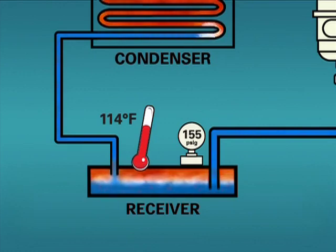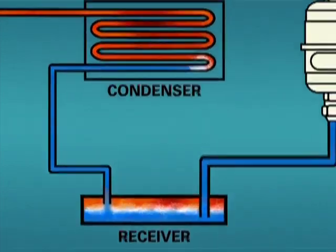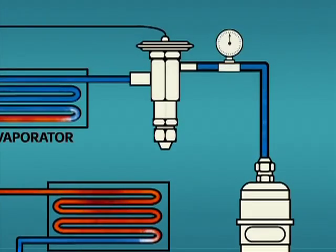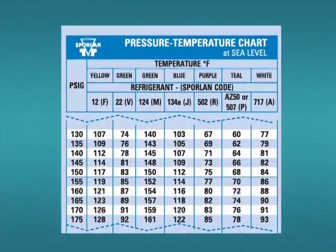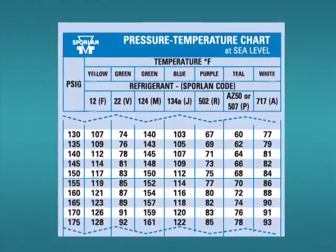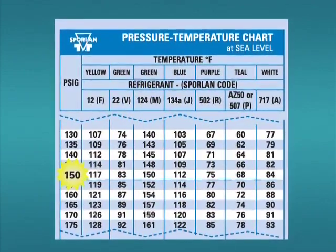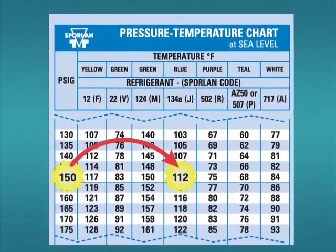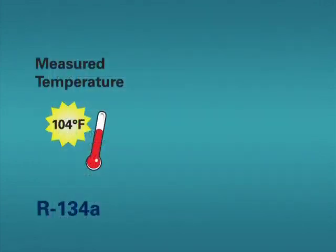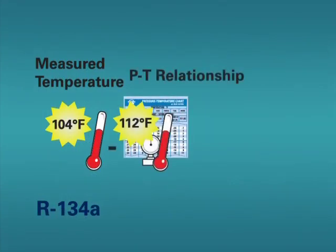Only the liquid vapor interface in the receiver must be at saturation. As another example, let's take readings at the TEV inlet. Our pressure gauge reads 150 PSIG and our measured temperature is 104 degrees Fahrenheit. To calculate our subcooling, we again reference our PT card. 150 PSIG on the PT card indicates a temperature of 112 degrees Fahrenheit. The difference between 112 degrees Fahrenheit and 104 degrees Fahrenheit is 8 degrees Fahrenheit subcooling.